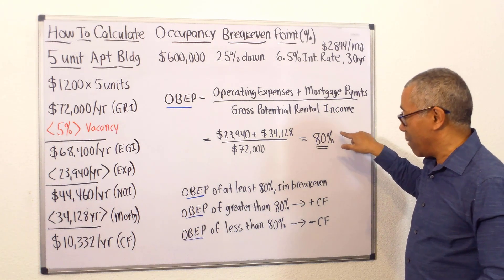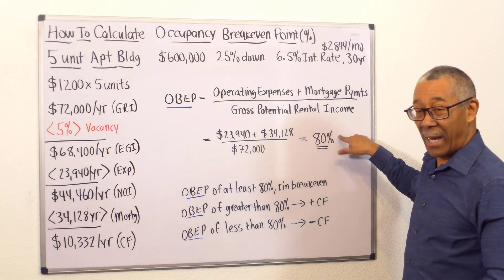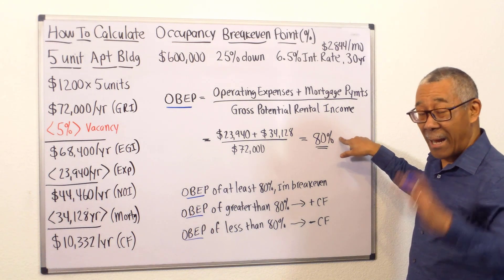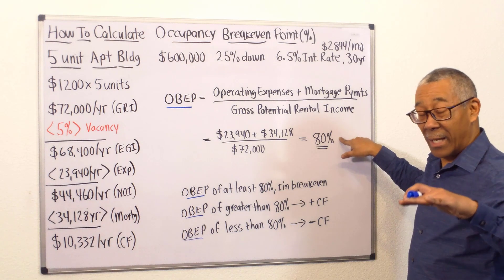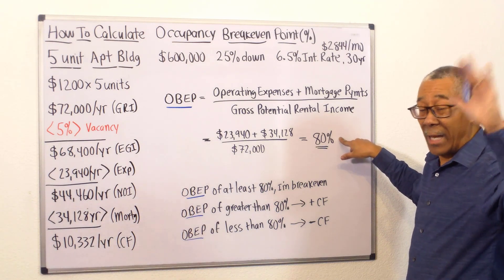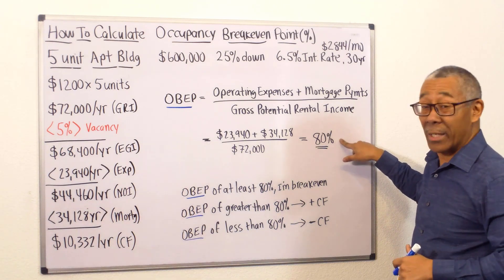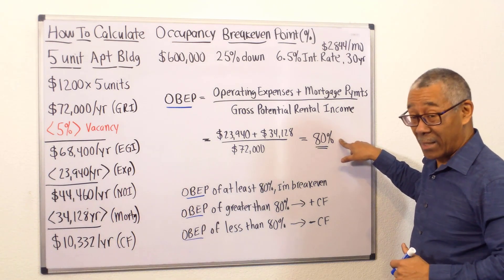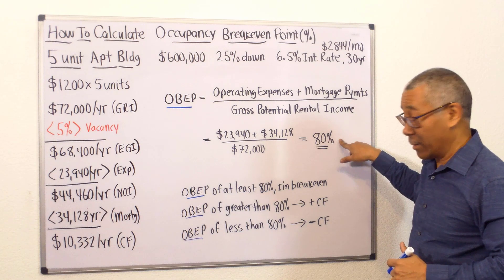So that means once I achieve 80% occupancy, I'm at break-even. Anything over that, I'm cash flowing. Anything under that, I'm negative cash flowing.